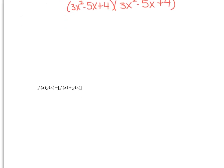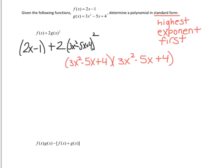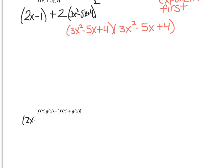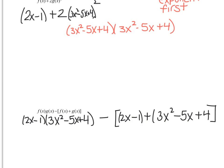And then the last problem, what am I asking you to do? Take f of x times g of x. So what's f of x? f of x is 2x minus 1. So let's do that. 2x minus 1 times g of x, which is 3x squared minus 5x plus 4. So let's do that. 2x minus 1 times f of x plus 1 times f of x plus 1 times g of x.